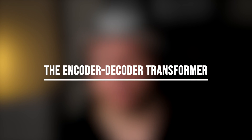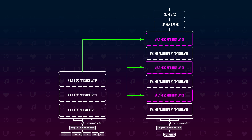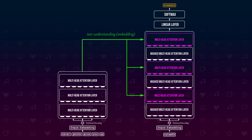Last but not least, the encoder-decoder transformer combines an encoder stack and a decoder stack. The input consists of the input to the encoder — for example, an English sentence — and the already generated output of the decoder. If we have nothing generated yet, we start with a padding or special start token. After each masked multi-head attention layer of the decoder stack, a multi-head attention layer is added, and the output of the encoder stack is handed into each of those multi-head attention layers. The encoder processes its input and generates an embedding, which is then injected into the decoder stack. The decoder stack predicts the next token of the translation, and we can run this again multiple times to translate the sentence.